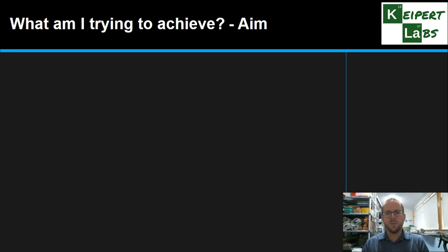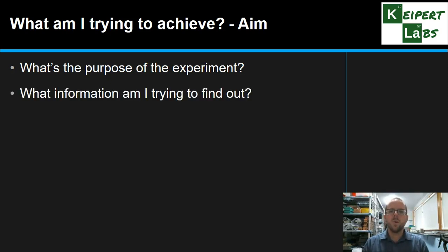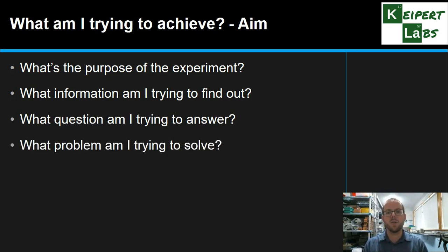So firstly, what am I trying to achieve? We call this the aim. It's the purpose of the experiment. What are you actually trying to do? What information are you trying to find out? Maybe it's a question that you're trying to answer or a problem that you're trying to solve.